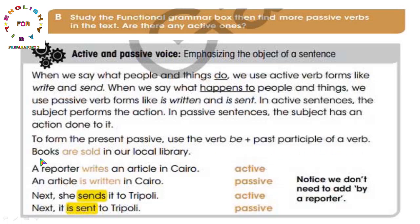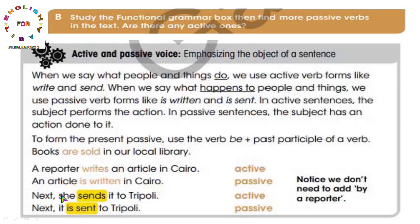مثال من الكتاب: boxes are sold - استخدمنا are لأن boxes جمع. Boxes are sold in our local library. نشوف مع بعضنا: a reporter writes an article in Cairo - هذه active. حولناها إلى passive فأصبحت: an article is written in Cairo. بدأنا من المفعول به an article، وضعنا verb to be، ثم الفعل بالتصريف الثالث، ثم in Cairo.